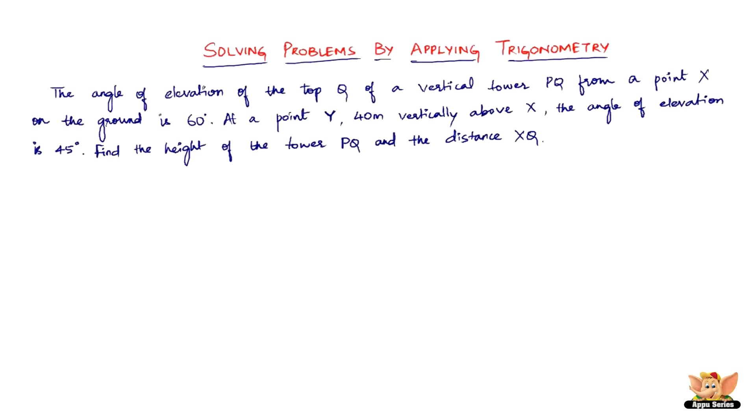In this video let us continue solving problems by applying trigonometry. The problem reads: The angle of elevation of the top Q of a vertical tower PQ from a point X on the ground is 60 degrees. At a point Y 40 meters vertically above X, the angle of elevation is 45 degrees. Find the height of the tower PQ and the distance XQ.